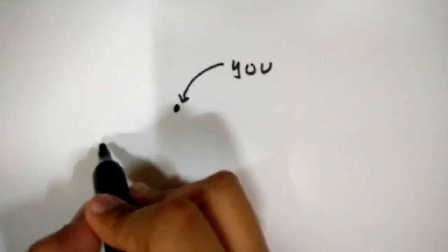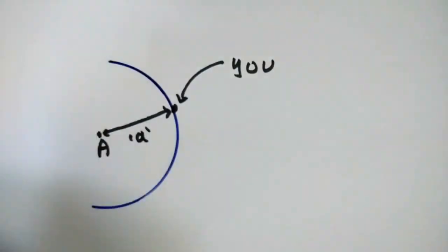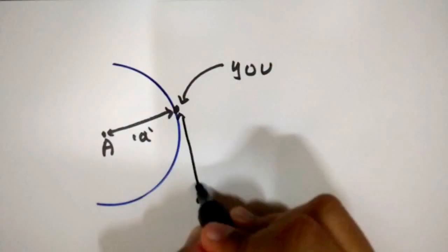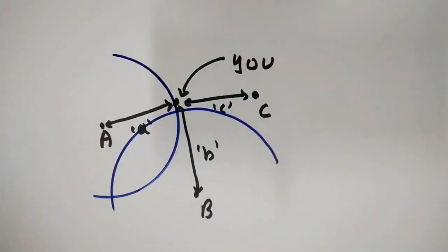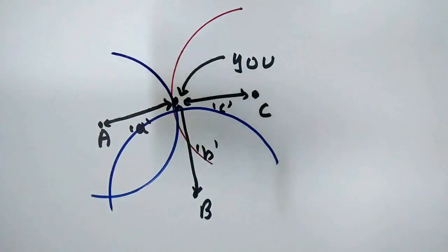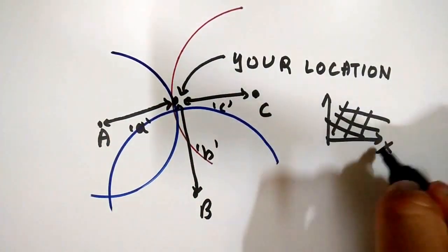To know how GPS works, let's take a two-dimension analogy. Suppose you know your distance from point A. This means you are on a circle of radius A. Just like point A, you know your distance from two other points called point B and point C. These three circles intersect at one single point and that point is your location in two-dimensional space.